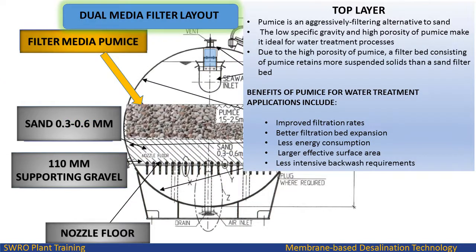Top layer: pumice is an aggressively filtering alternative to sand. The low specific gravity and high porosity of pumice make it ideal for water treatment processes. Due to the high porosity of pumice, a filter bed consisting of pumice retains more suspended solids than a sand filter bed. Benefits of pumice for water treatment include improved filtration rates, better filtration bed expansion, less energy consumption, larger effective surface area, and less intensive backwash requirement.